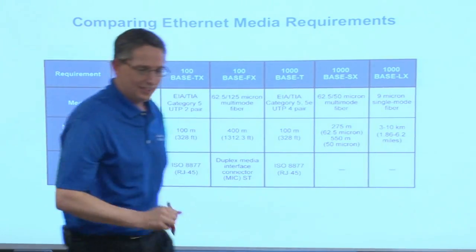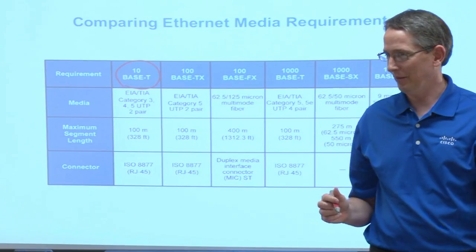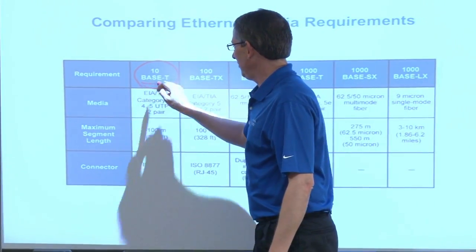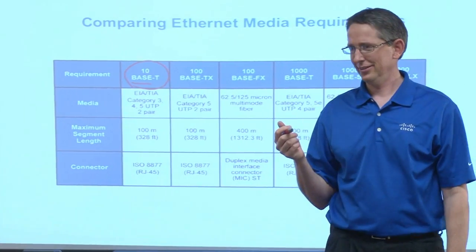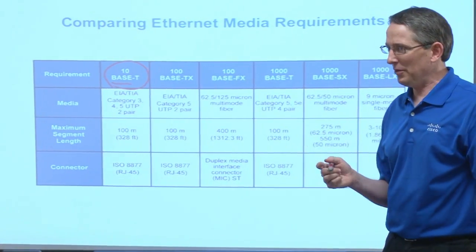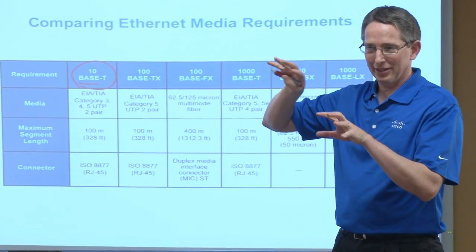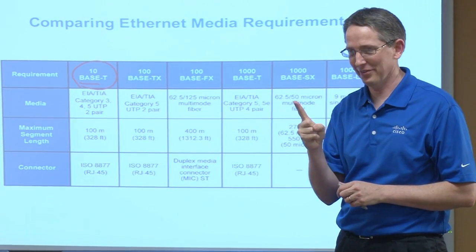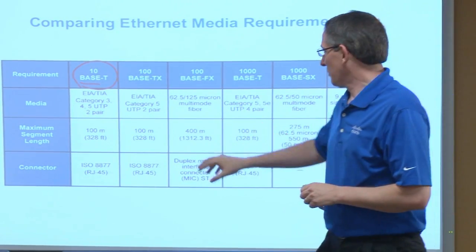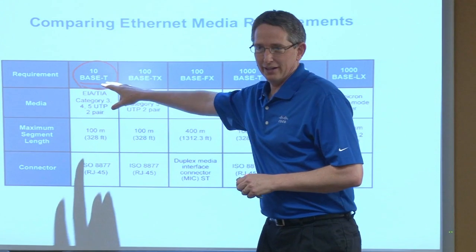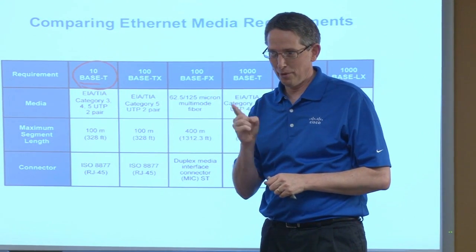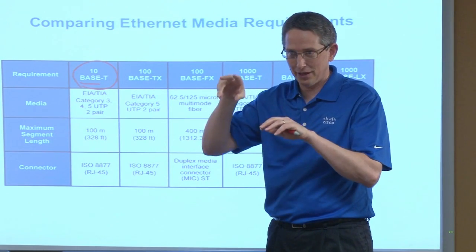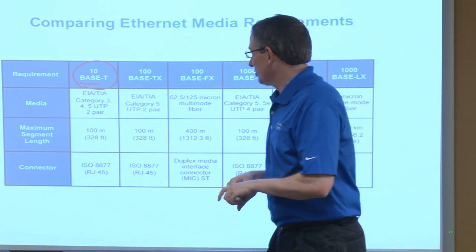Here's what it means. 10 means 10 megabits. BASE means baseband. Have you ever heard the concept broadband? Broadband is multiple things happening at the same time. Baseband means there's one thing going on at a given time. So with Ethernet, we're using baseband — it's like there's a digital signal, ba-ba-ba-ba-boom, and that's it. We don't have multiple frequencies going at the same time. It's one signal at a time.